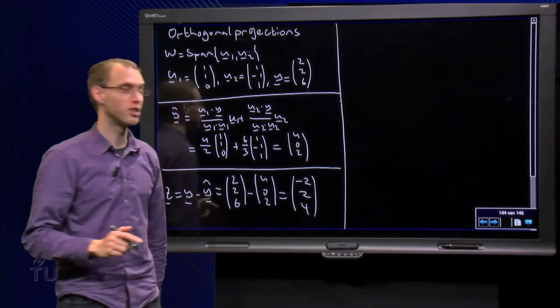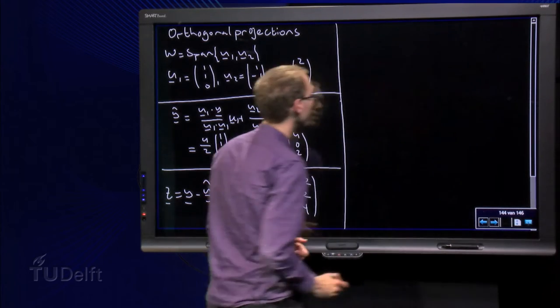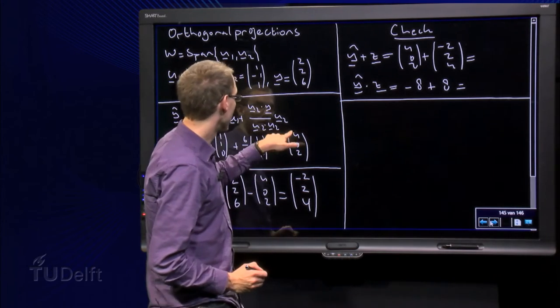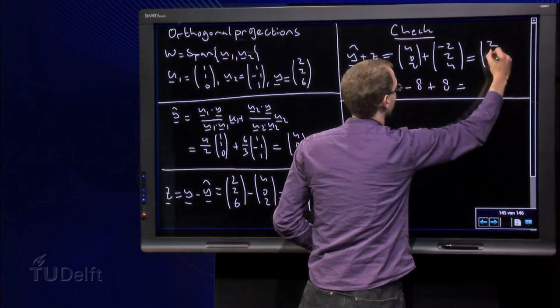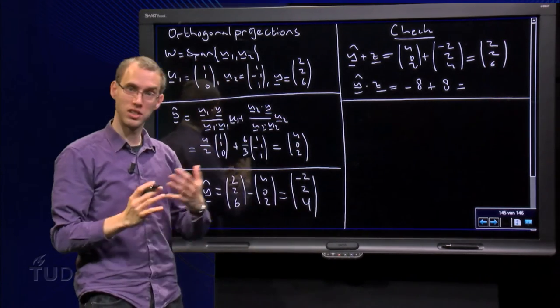Let's check whether the answer is correct, to be completely sure. y-hat plus z has to equal y. So let's see: y-hat plus z gives us [2, 2, 6], which equals y. So that's indeed correct.